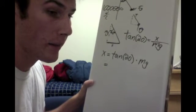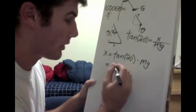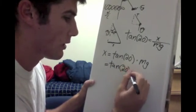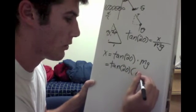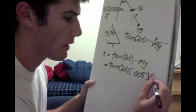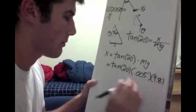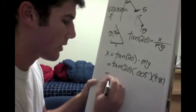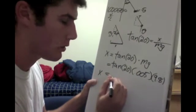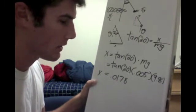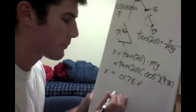If you plug everything in, tangent of 20, the mass is going to be 0.005 kilograms, and then gravity is 9.8 meters per second per second. And you end up getting that x is equal to 0.0178 newtons.